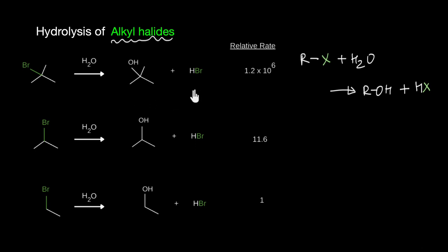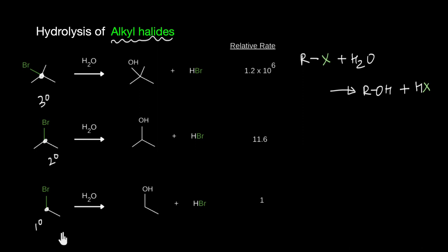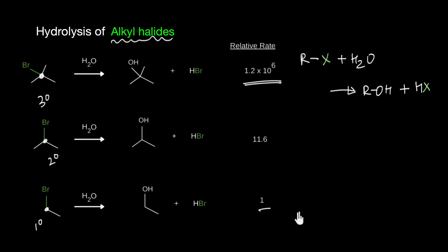What I have here are different alkyl bromides that react with water to give alcohol and HBr. The first alkyl halide is a third degree alkyl halide, because the carbon atom to which the halogen is attached is bonded to three other carbon atoms. The second is a second degree, and the third is a first degree or primary alkyl halide. It turns out the hydrolysis of a third degree alkyl halide is almost 10 to the power 6 times faster than a first degree alkyl halide.